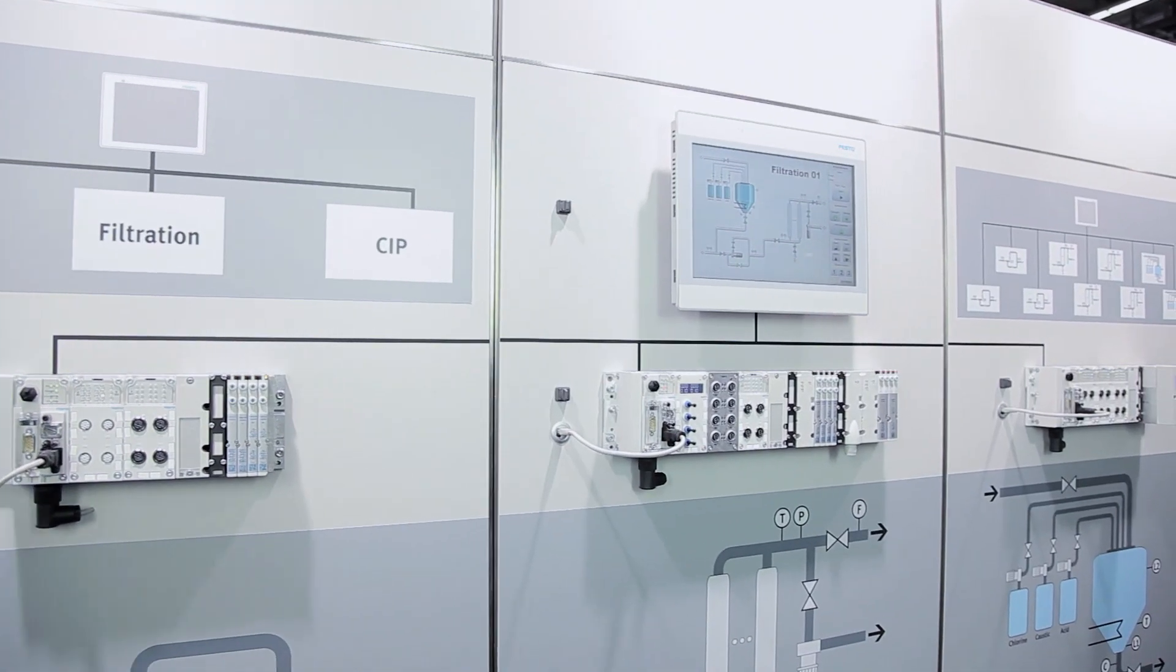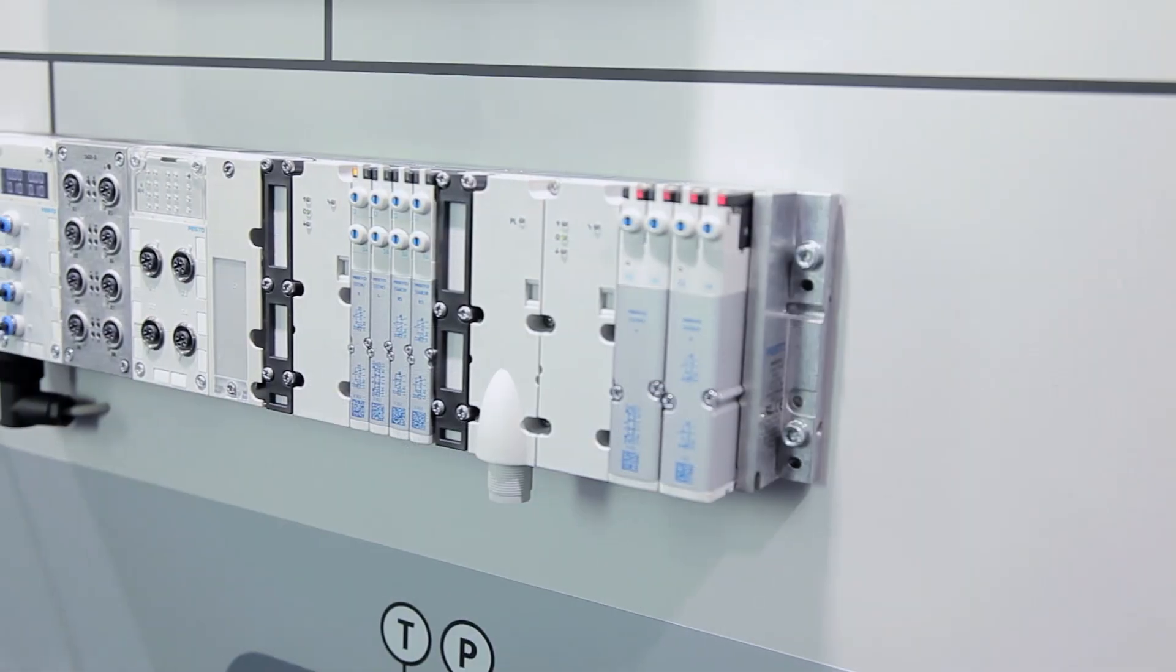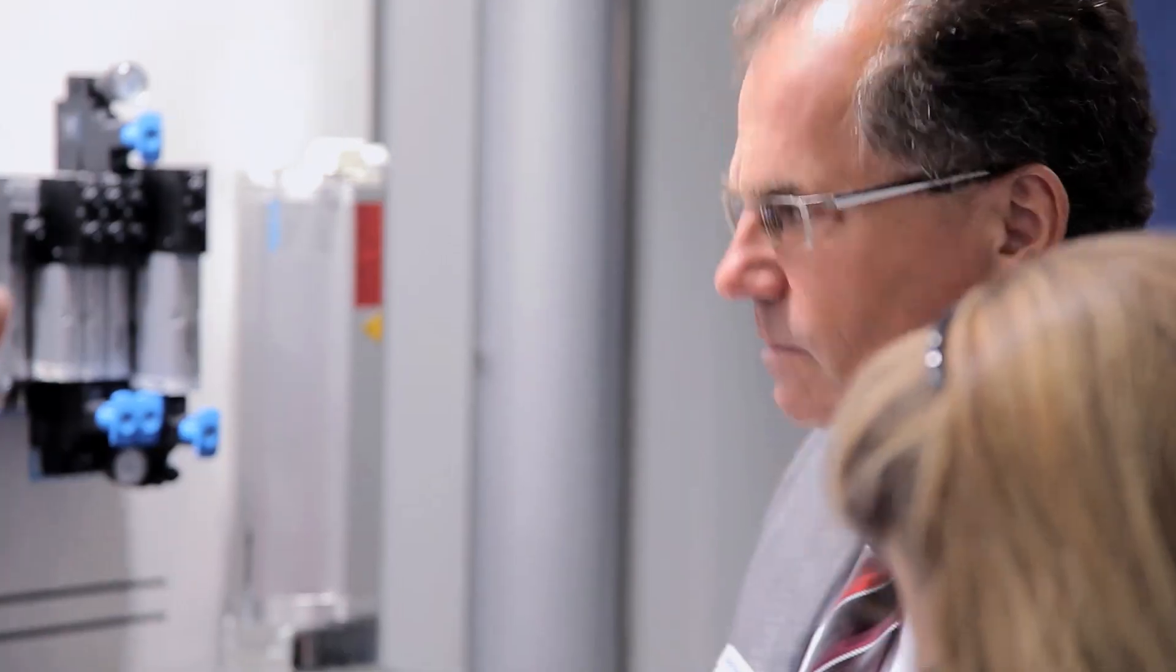Modular, distributed and intelligent, these are the requirements of future process industry plants. Festo, as a supplier of automation technology, follows this trend in the market. We show here at the Achema distributed control solutions for various process industries. We show how our customers can get benefit and monetary value out of our integrated solutions during the whole lifecycle of a production plant.